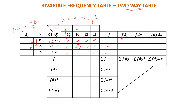Next, we construct additional columns: f·dy, f·dy², f·dx, f·dx², and f·dx·dy. For f·dy, multiply each row-total f by the corresponding dy value and sum them. For f·dy², multiply f by dy squared and sum. Similarly, f·dx is f multiplied by dx, and f·dx² is f multiplied by dx squared. Note that f·dx·dy and f·dy·dx are the same, since it is simply a multiplication of f, dy, and dx.